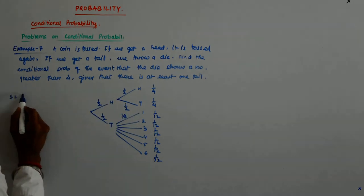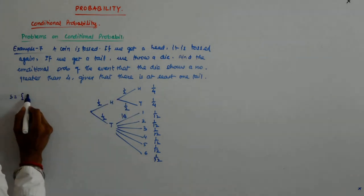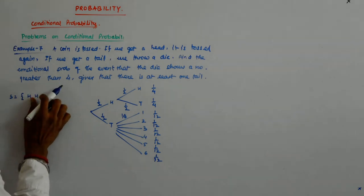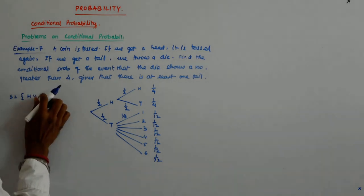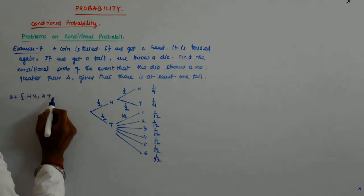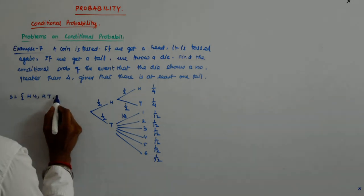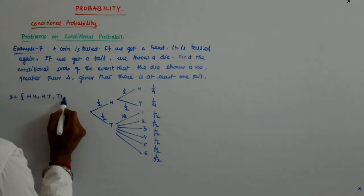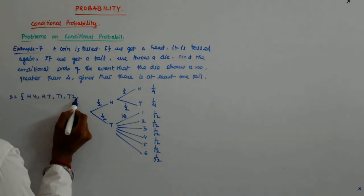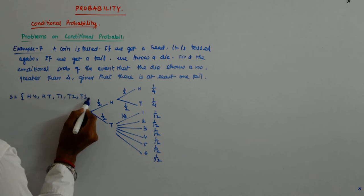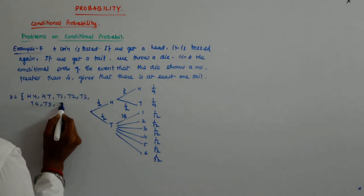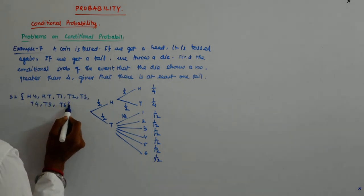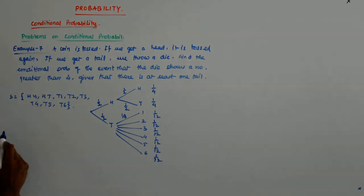Do we need to write it? Okay, fine. The sample space is HH, HT, and T1, T2, T3, T4, T5, T6.